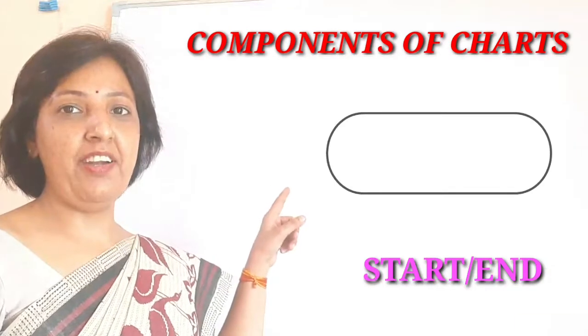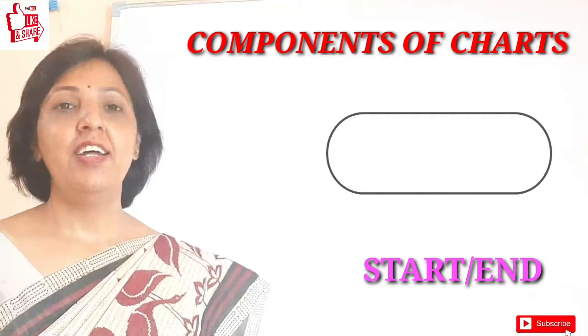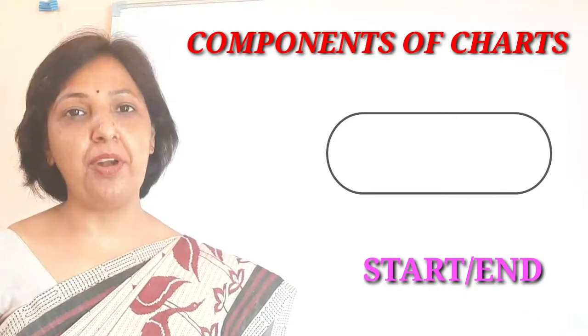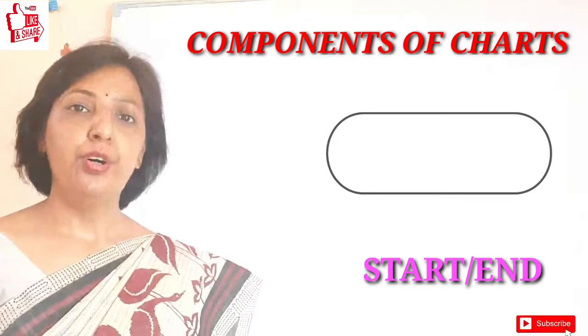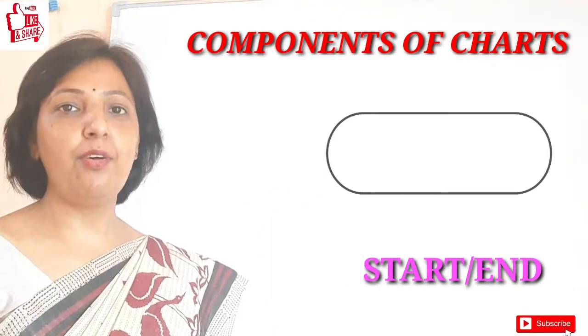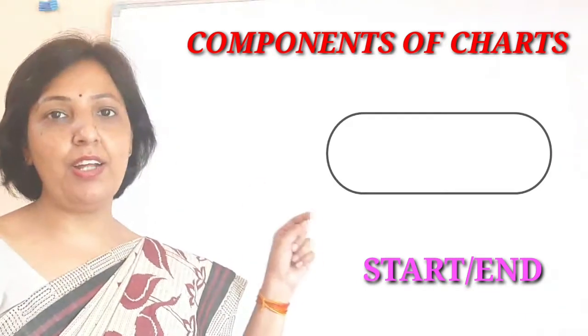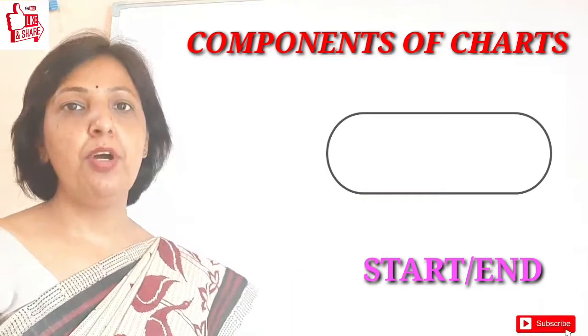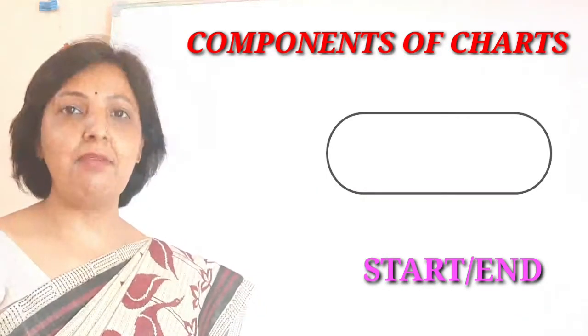So the first component that you can see here, this is going to represent the start and end of the program. This geometrical shape is going to show you the starting of the program and ending of the program. So if you want to show where the program starts, by drawing this shape you can show the start, and even where the program ends, this can be represented through this shape.